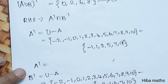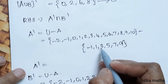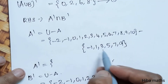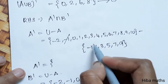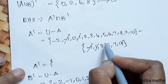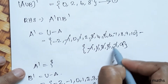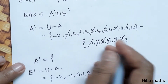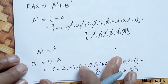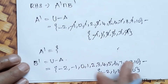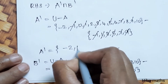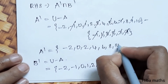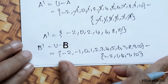A dash is equal to U minus A. A = {-1, 1, 3, 5, 7, 9}. Cancelling those elements from U: -1, 1, 3, 5, 7, 9 are removed. So A dash = {-2, 0, 2, 4, 6, 8, 10}.